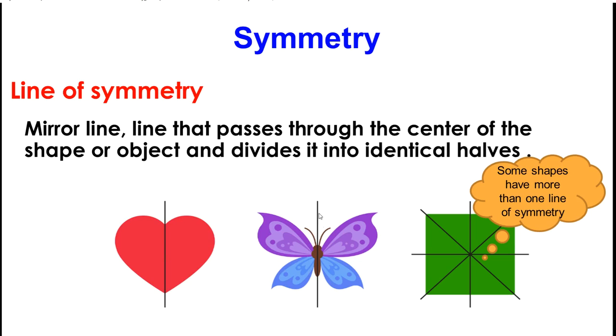Here on my butterfly, if I draw the line down the middle, I can see that this half of my butterfly is exactly the same or identical to this half. But, for example, if I wanted to draw the line horizontal, I could see that it wasn't because these antennas would not let me be symmetrical.